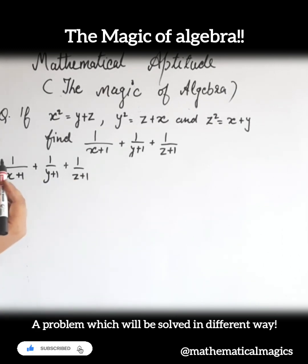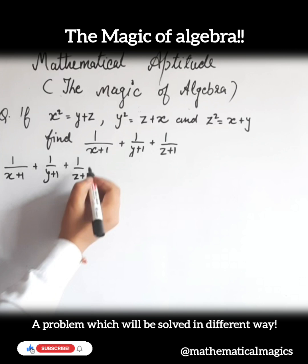What we have to do? In first part, multiply by x, both numerator and denominator. In second, multiply by y and in third, multiply by z.